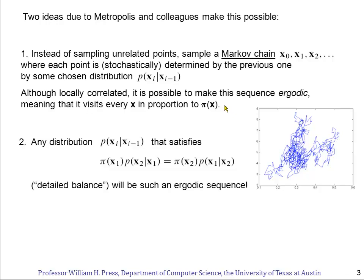Still sounds rather magical. Now here was the second key idea that Metropolis noticed. They noticed that if we choose a P of XI, XI minus 1 that's going to generate the Markov chain, and if we're able to choose that P that satisfies this condition, this condition would be called by physicists detailed balance. Anyway, this condition is sufficient to guarantee that the sequence will be an ergodic sequence and will visit all the possible points in the probability distribution in proportion to their probability.